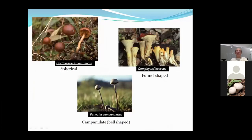Others are spherical, like Cortinarius cinnamomeus, or funnel-shaped like Gomphus floccosus, or campanulate and bell-shaped like Panaeolus campanulatus — this one with a little white fringe around the margin.